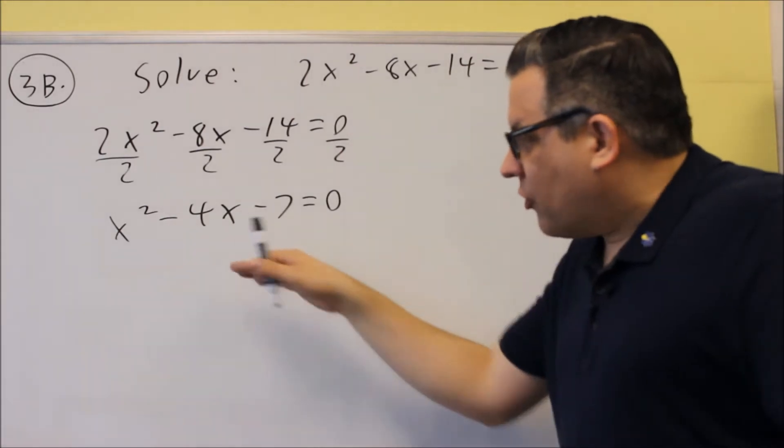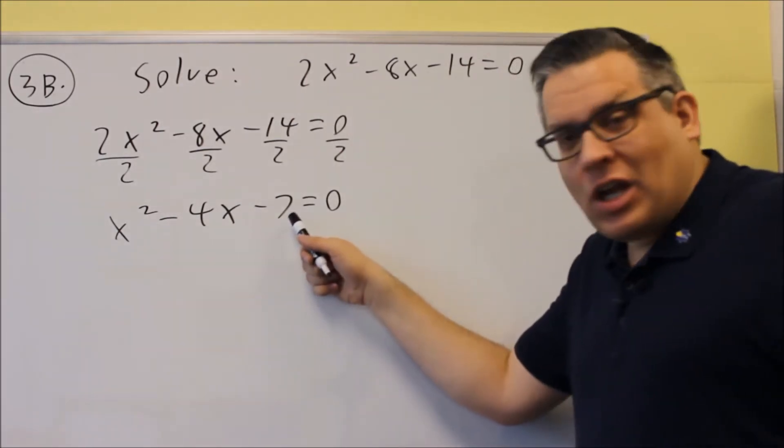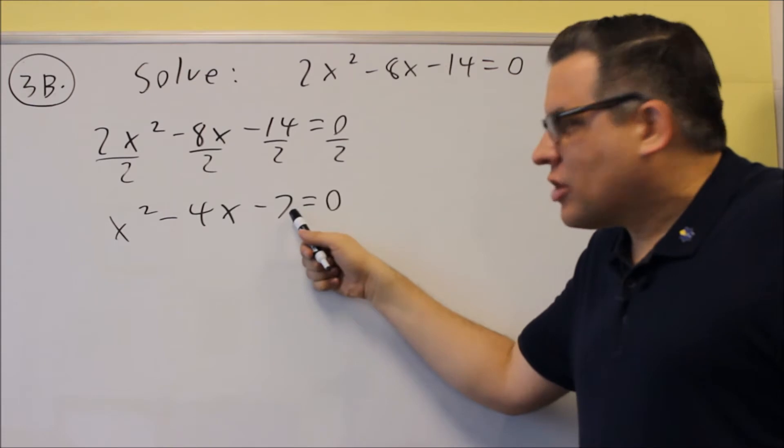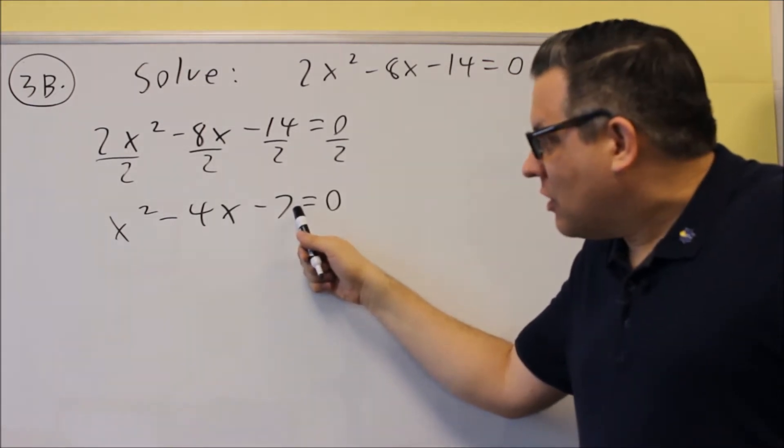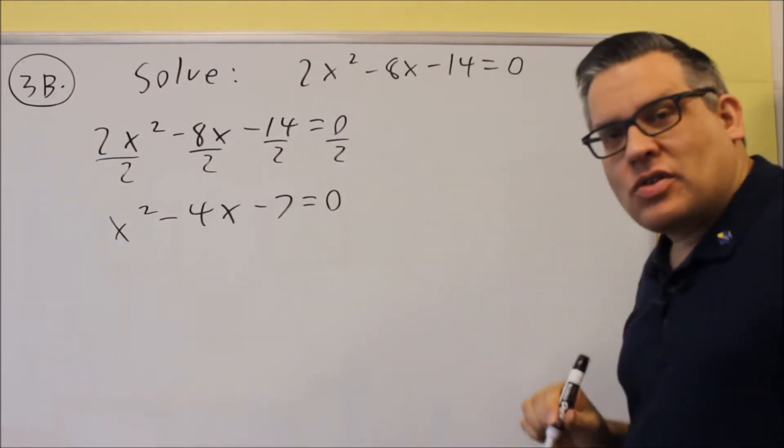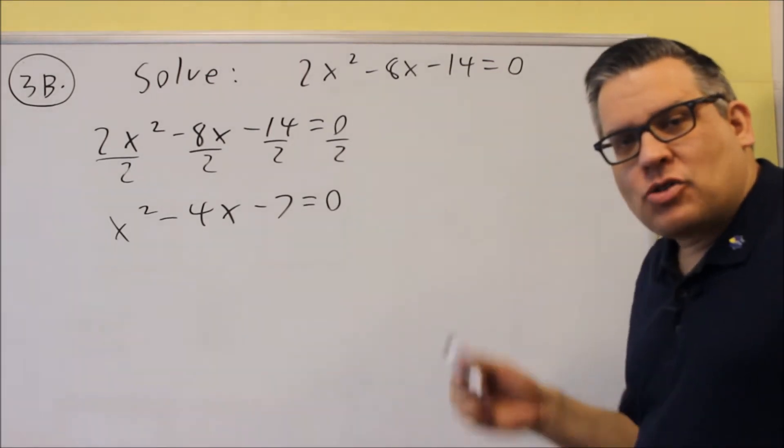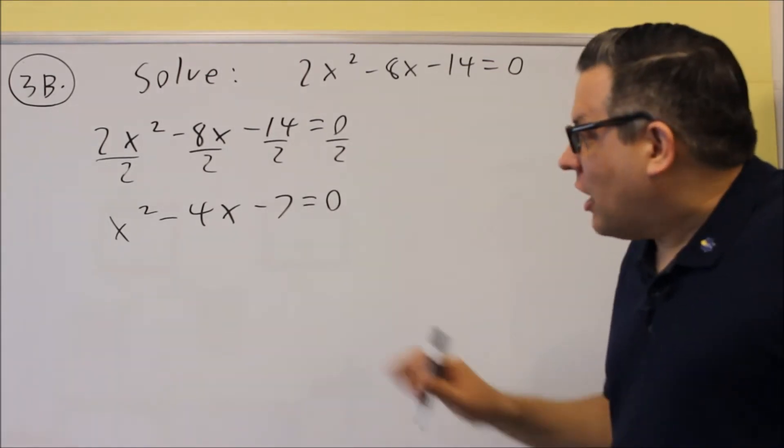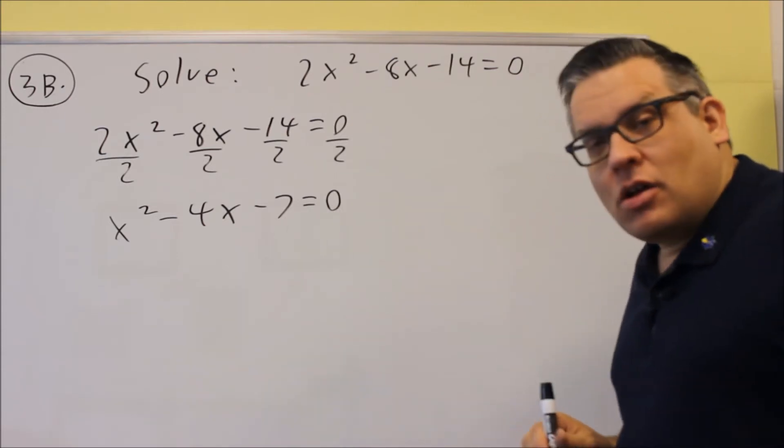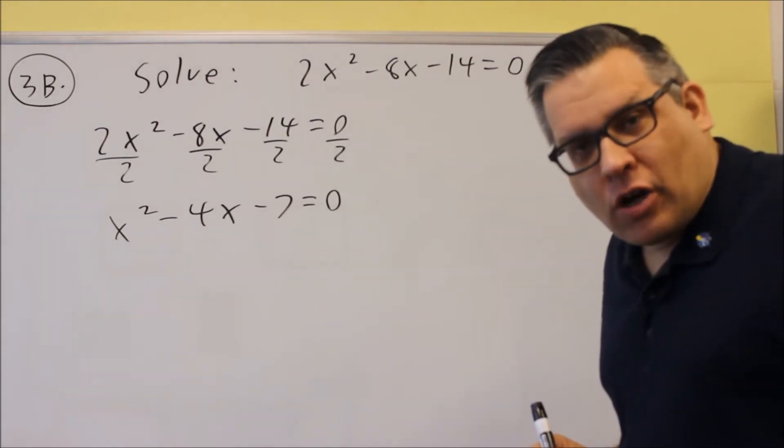So we'll first attempt to see if we can factor. However, this one we can't factor because two numbers that multiply to make negative 7 and add to be negative 4, or 7 only has two factors, 1 and 7. So we know this does not factor. So whenever that occurs and you can't factor it, then what you're going to have to use is quadratic formula.